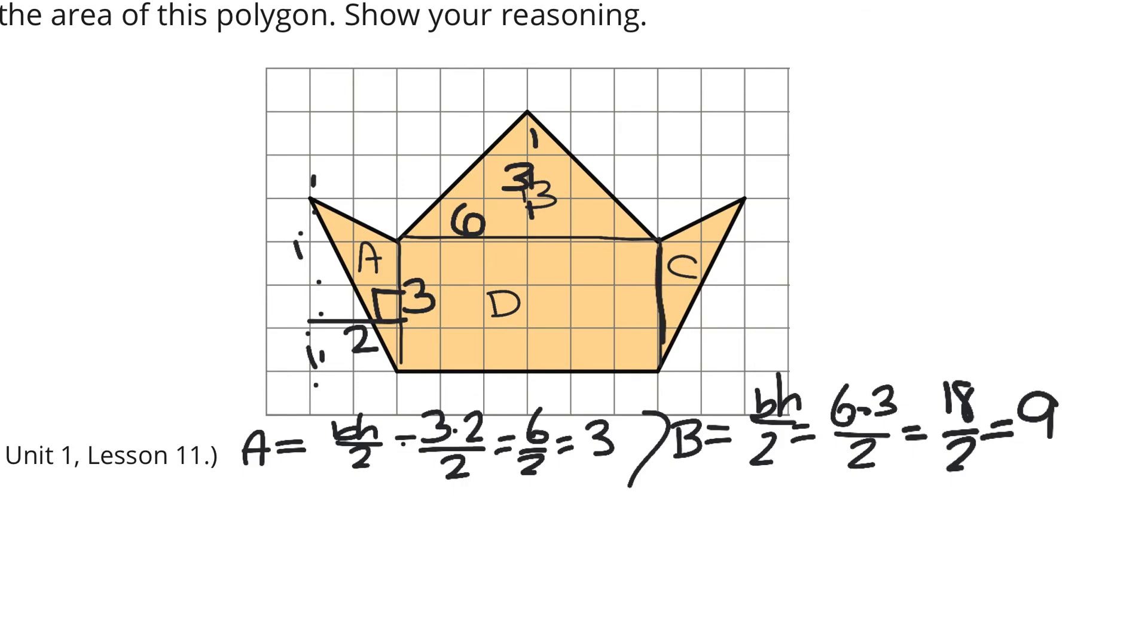Moving on to C. Looks familiar to A, but let's just double-check and count these. Our base is three, parallel line for the height. Gets us a height of two. And yes, that is the same as A. So, we could say C is the same thing as A, which is three. D, it's a rectangle. Don't divide by two. It's just going to be length times width. In this case, it's six times three, which is 18.